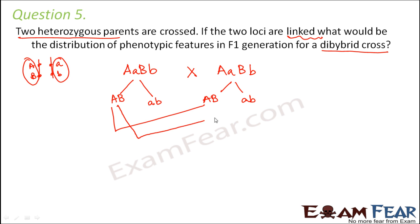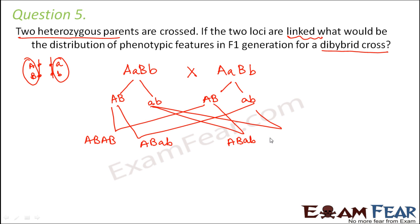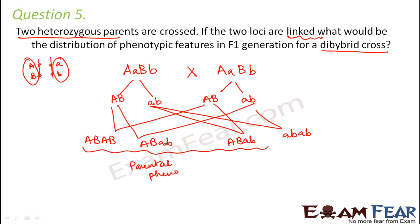The possible combinations are: AB/AB, AB/ab, AB/ab, and ab/ab. Looking at their phenotypes: since capital A is dominant over small a and capital B is dominant over small b, the first three combinations all show the parental phenotype (AB expressed). Only the last combination, ab/ab, expresses only the recessive traits.